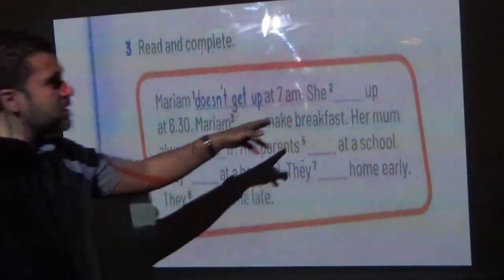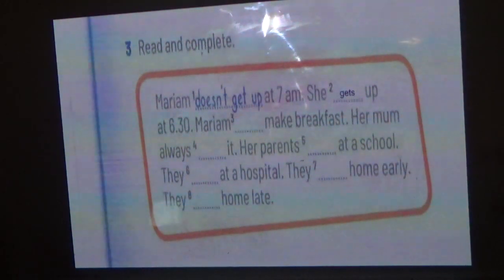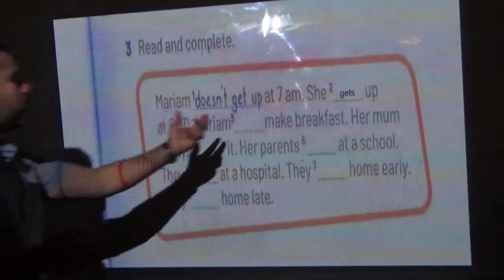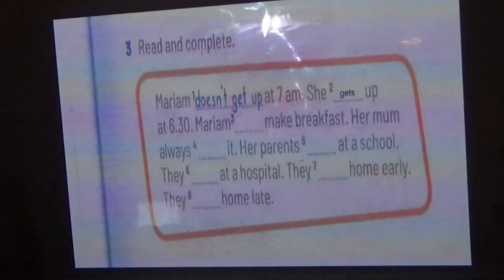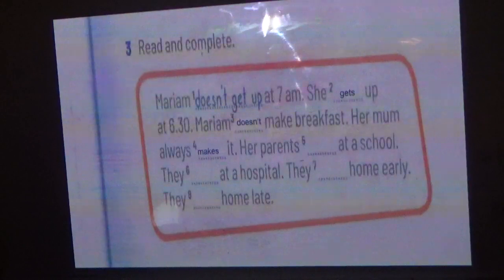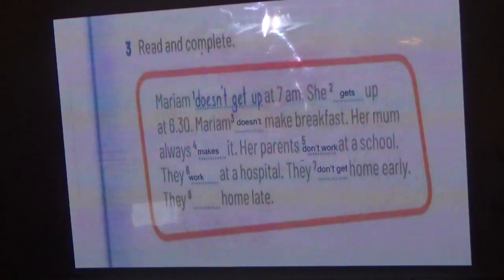In the present simple, we say 'she gets up' — not 'she get'. Maryam doesn't make breakfast. In the negative, we write 'Maryam doesn't make her breakfast, her mom always makes it.' Next: her parents don't work at school, they work at the hospital. We write 'work' not 'works' because the subject is 'they'. They don't get home early — they get home late.